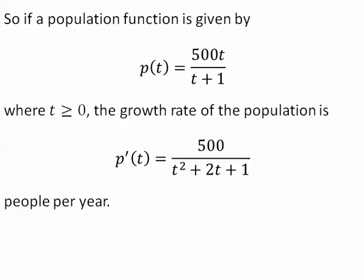So if a population is given by p equals 500t divided by t plus 1, the growth rate of the function is p prime equals 500 divided by t squared plus 2t plus 1. And the units in that is people per year.